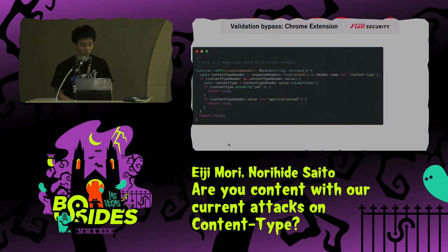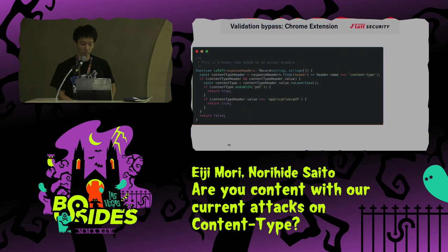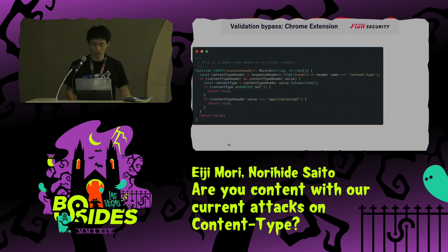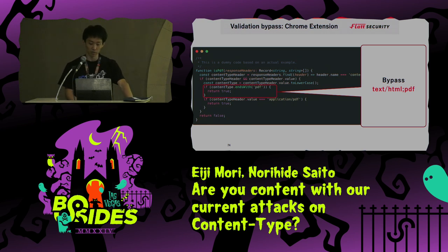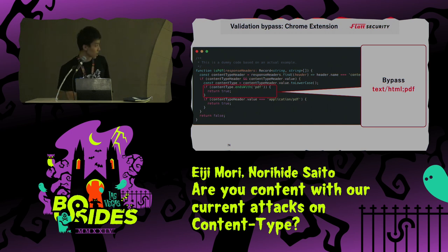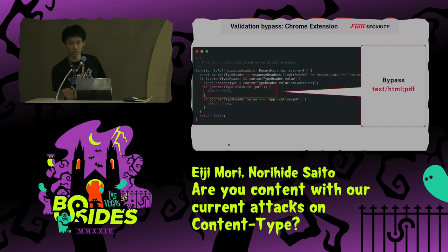This is an example from a Chrome extension. XSS in a Chrome extension has stronger permissions than normal XSS. It was just barely OK and has no problem currently, but there is a potential danger. It can bypass text/HTML;PDF due to the lax determination of PDF in the HTTP response content type. That is, you can have HTML render that looks like a PDF, which may be a hit if you have a PDF sniffer turned on. For example, the validation is content-type.endsWith('PDF'), so you can bypass with text/HTML;PDF.